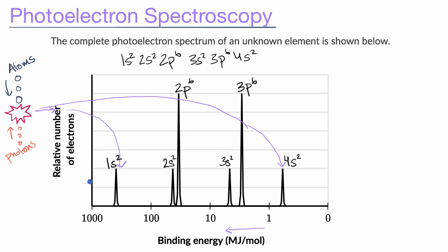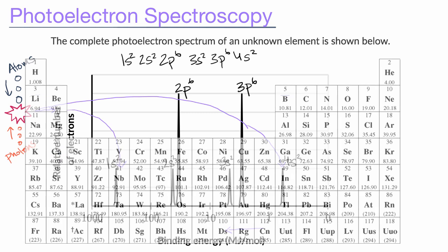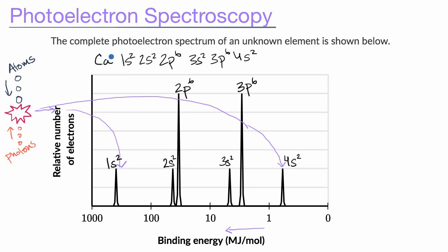Its electron configuration is 1s², 2s², 2p⁶, 3s², 3p⁶, 4s². What element has this configuration? Using the periodic table: 1s² gets us to helium, then 2s², 2p⁶ gets us to neon, 3s², 3p⁶ gets us to argon, and then 4s² gets us to calcium. So our mystery element is calcium. If someone were to ask about valence electrons, that would be this outermost spike — the spike of electrons with the lowest binding energy. They're furthest out and easiest to knock off, so more of the photon energy is converted into kinetic energy and those electrons get deflected further.